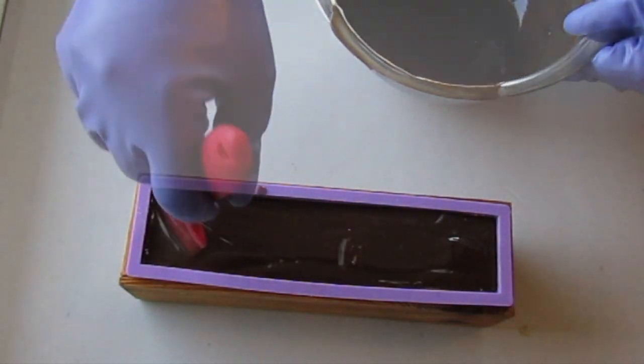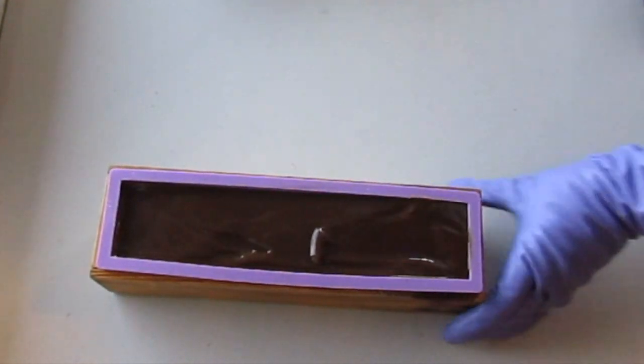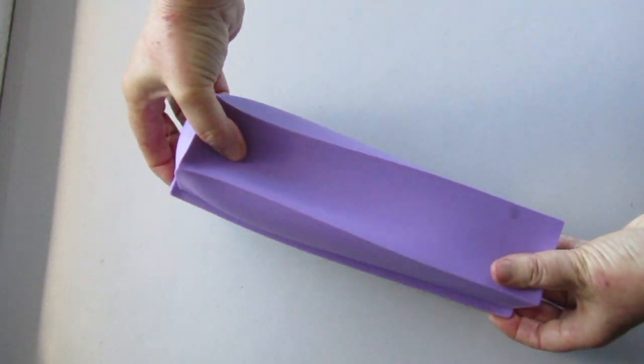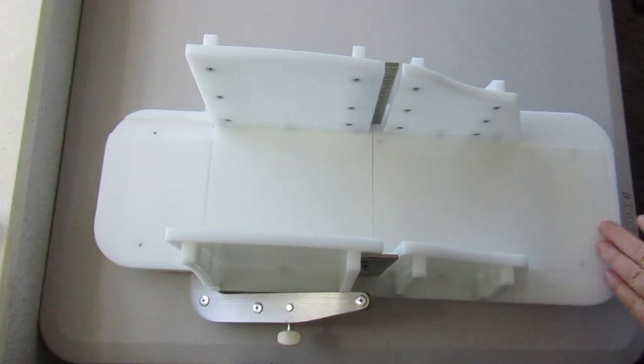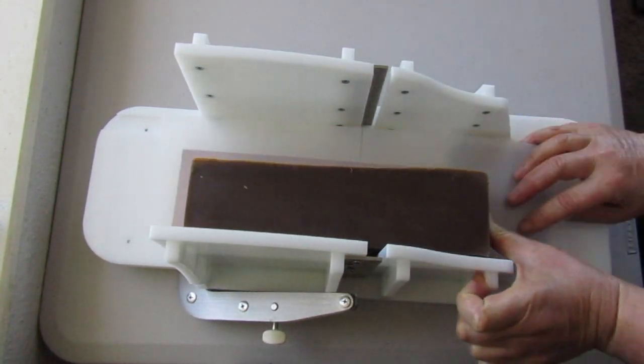After spritzing it with isopropyl alcohol to reduce soda ash, I used the cold process oven process, which involves putting the soap into a preheated oven at 60 degrees Celsius, turning the oven off, and leaving the soap in overnight. This ensures the soap goes through gel, making the color deeper and more even.